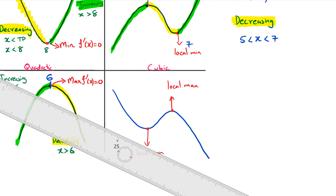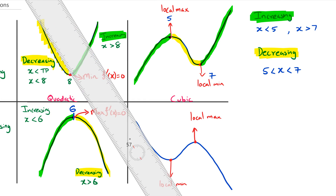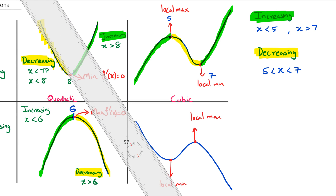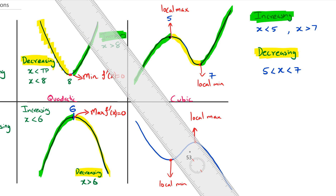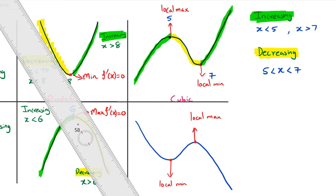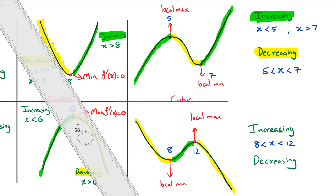For the negative cubic, you've got a local minimum and local max. Before the local minimum the ruler is pointing down — it's decreasing. Then between the two turning points it's increasing because the gradient is positive. Then it's decreasing again after the local max. Let's call these points 8 and 12: increasing for 8 less than x less than 12, decreasing for x less than 8 and x greater than 12.